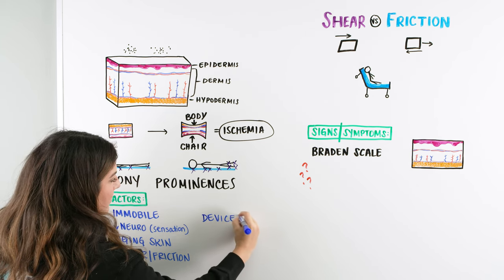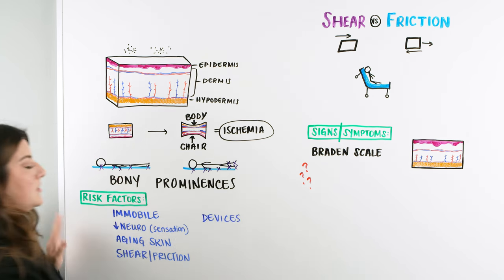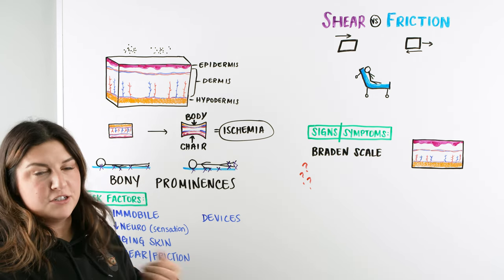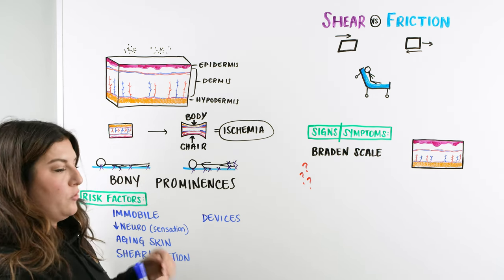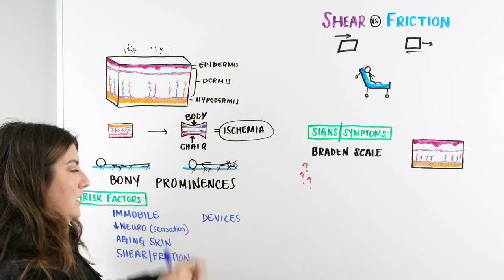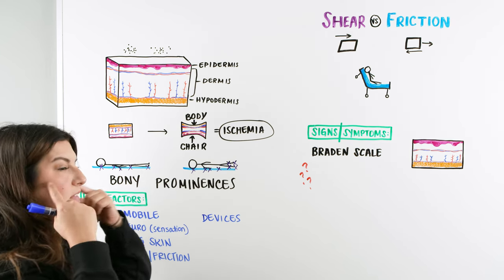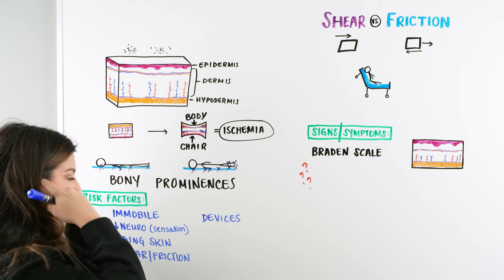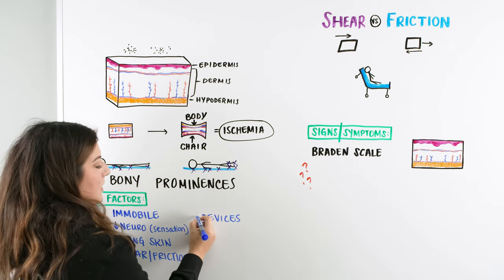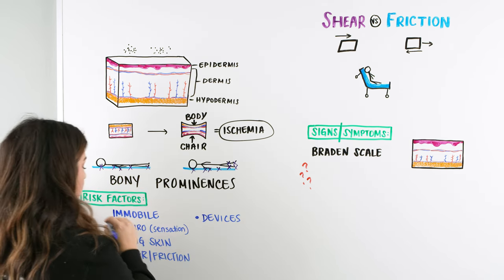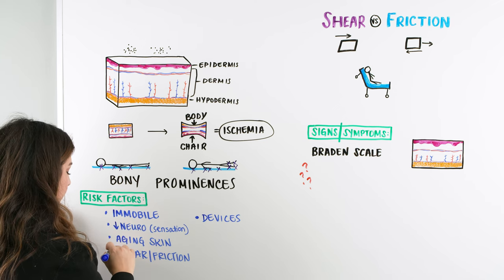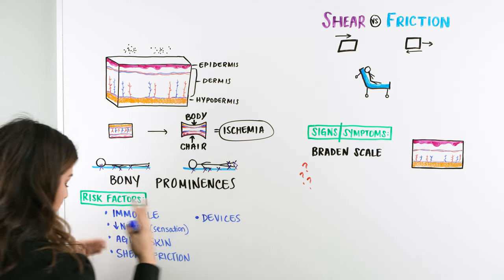Another risk factor is medical devices. Maybe the patient has something sitting on their skin — EKG stickers that have been on too long, or a tube lying against an area of skin, or a nasal cannula resting on the cheeks or behind the ears. Anything coming into constant contact with the skin can also cause potential breakdown.